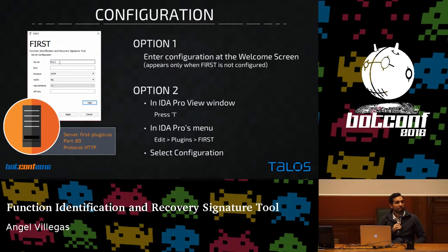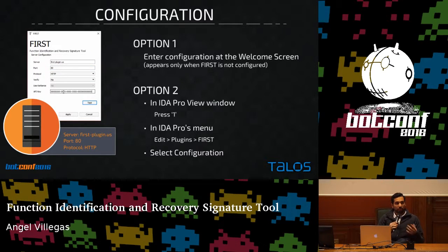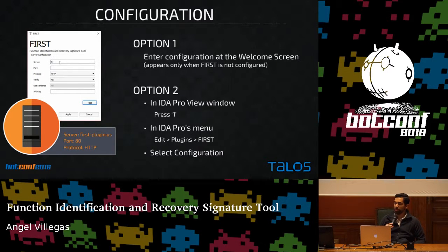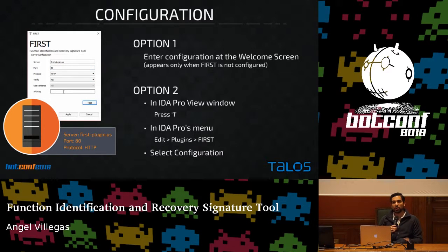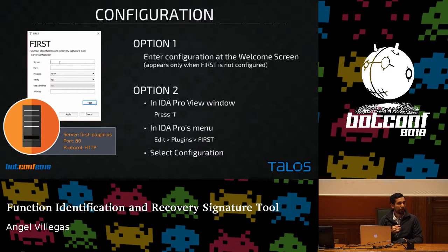Once installed, when you initially open IDA Pro, you'll be presented with a welcome screen. That screen allows you to connect to whichever FIRST server you prefer. FIRST being open source, we've created and are hosting a public server at first-plugin.us. If you're working in an environment without internet connectivity, on a closed network, or have intellectual property concerns, you can easily stand up your own FIRST server in a VM or on a dedicated server.